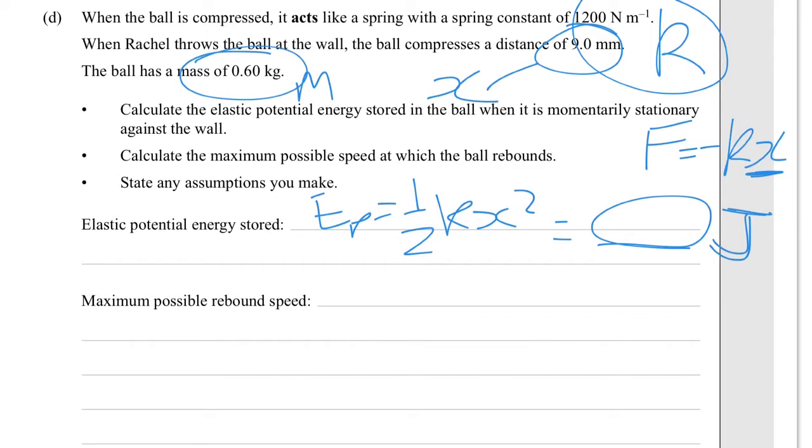The maximum possible rebound speed would be if all of that elastic potential energy is converted to kinetic energy. So we have to take that figure, that half KX squared, and use it in the kinetic energy formula, half MV squared.